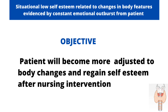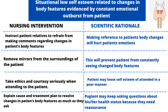The objective for the first diagnosis is that the patient will become more adjusted to body changes and regain self-esteem after nursing intervention. The first nursing intervention is to instruct the patient's relatives to refrain from making comments about the changes in the patient's body features. The rationale is that constantly talking about how the neck or eyes are changing may hurt the patient's emotions.